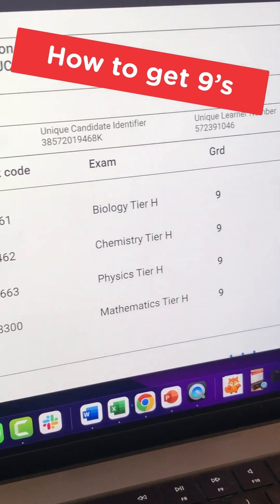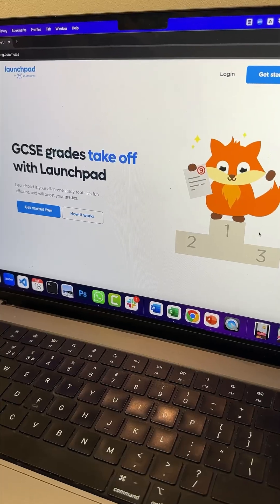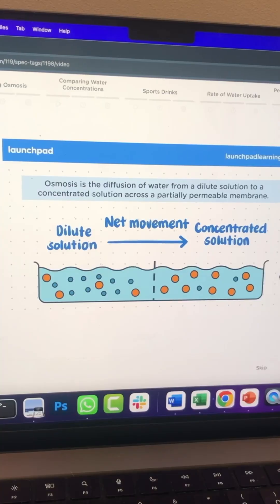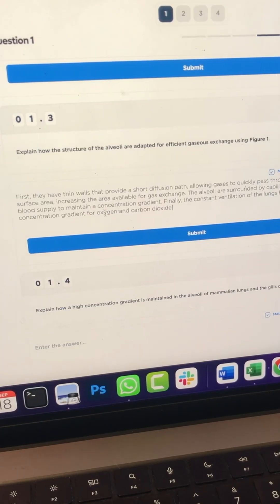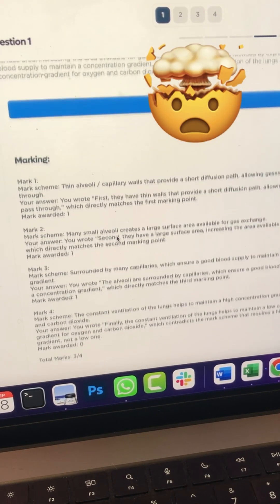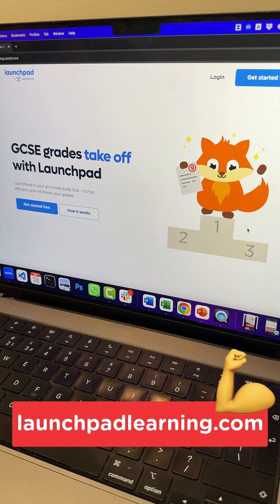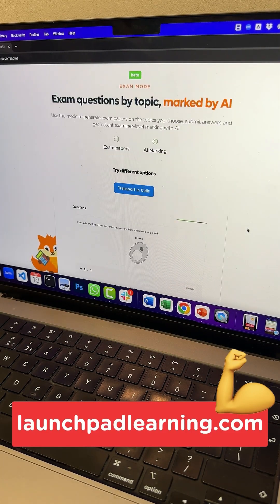If you want nines in your GCSEs, you have to check out Launchpad Learning's all-in-one learning platform. It's got high-quality resources like videos, quizzes, and notes, as well as smart AI features like instant examiner marking. Head to launchpadlearning.com and get started for free.